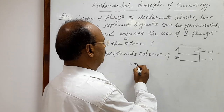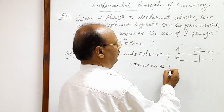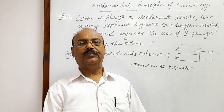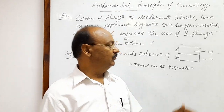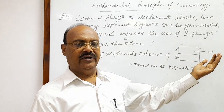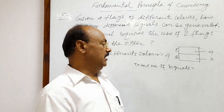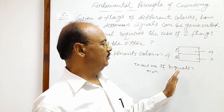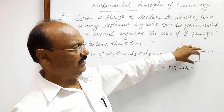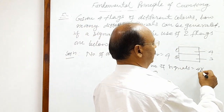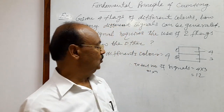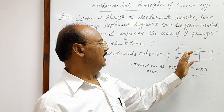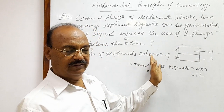Therefore, total number of signals will be — as discussed in the fundamental principle of counting, if one part of a job is done in M different ways and another part in N different ways, then total number of ways is M into N. So total number of signals is four into three, that is twelve. Twelve different signals can be formed by taking two different color flags out of the four given flags.